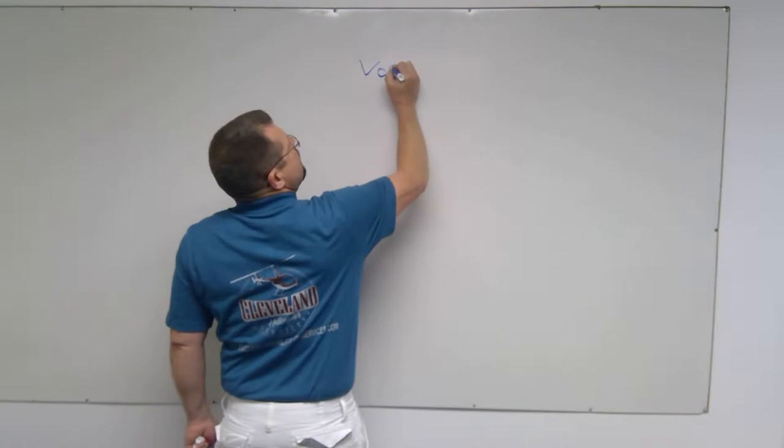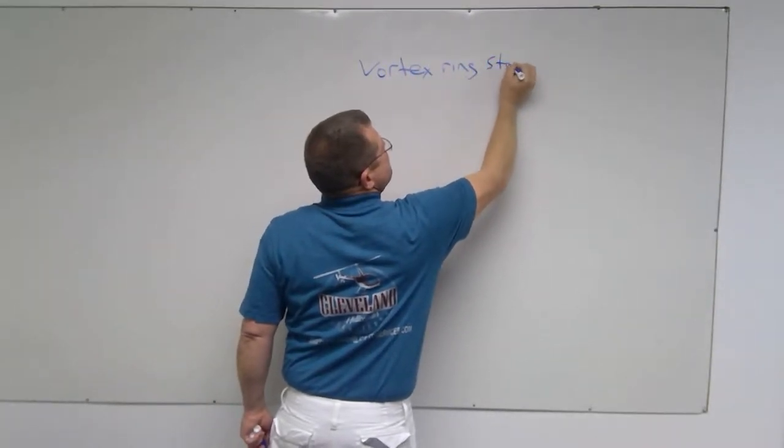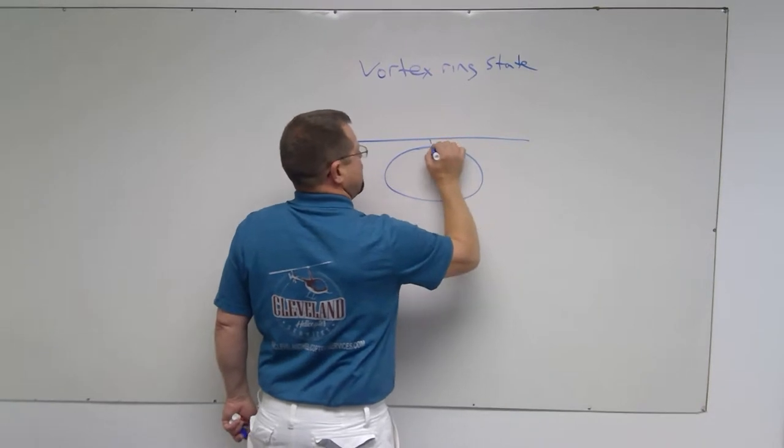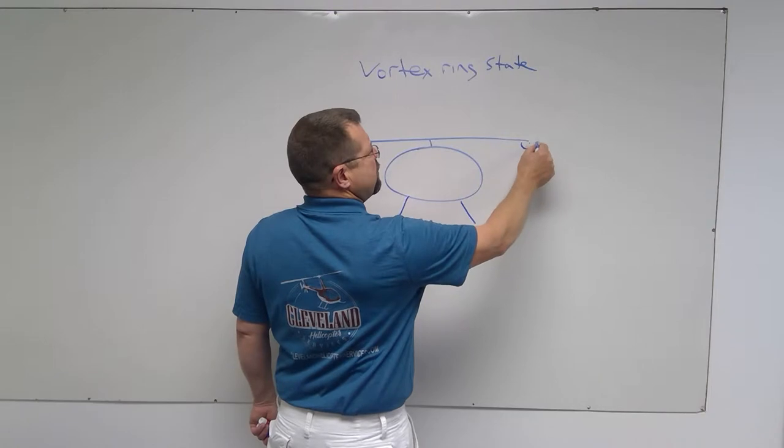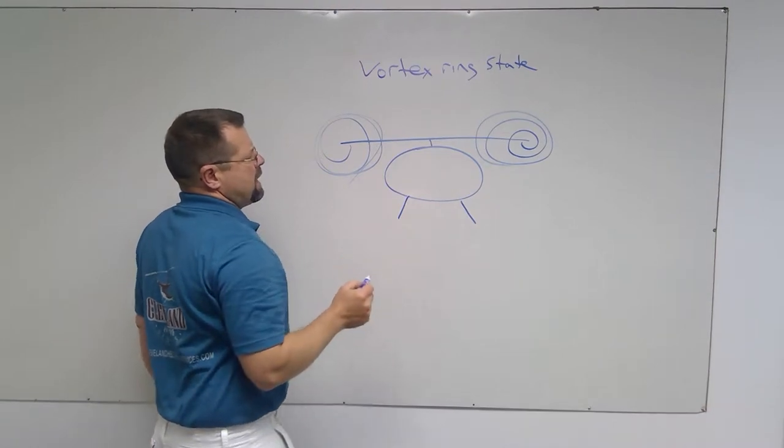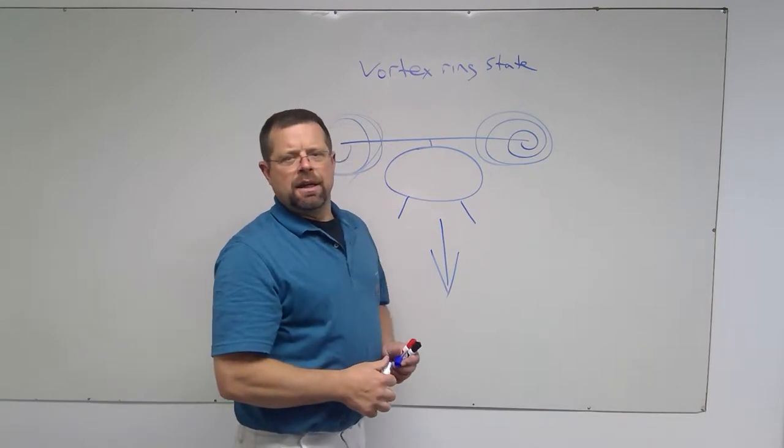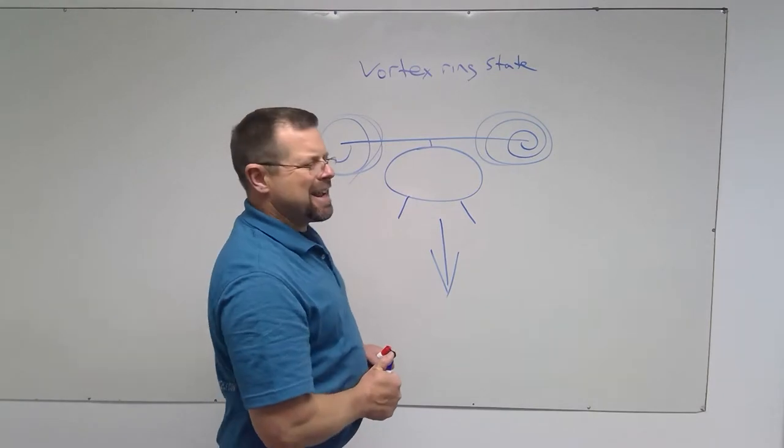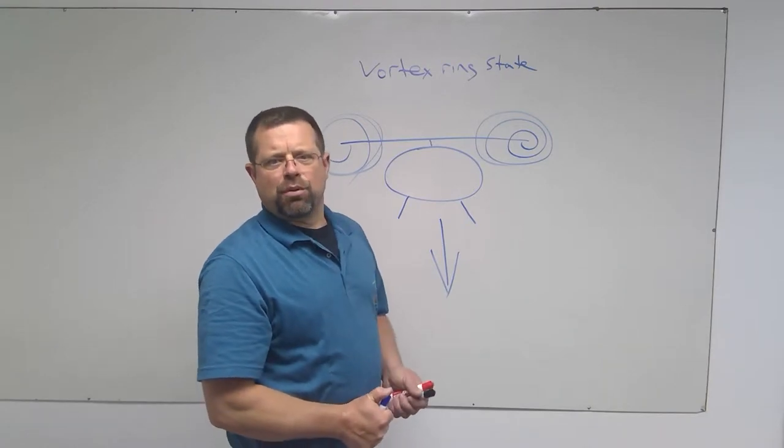Vortex ring state is when a helicopter develops vortices and begins to fall in its own dirty air and is no longer creating lift. The pilot may feel that the right thing to do is to lift up on the collective, but this is not going to fix the problem.